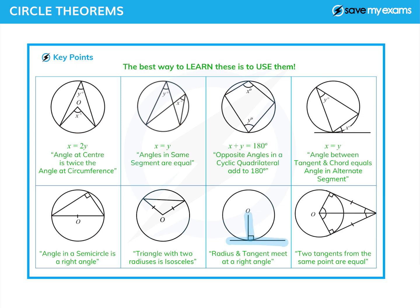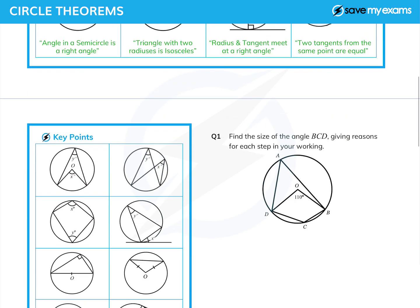A radius and a tangent always meet at right angles. And finally, if I take a point and draw a tangent to the circle from each side, I get exactly the same length line — and in fact that shape is a kite because it has two pairs of equal sides. Right, so you need to learn those. Let's have a look at a couple of questions.